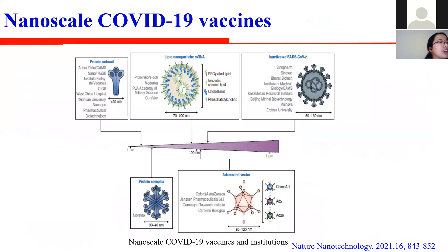Under the novel coronavirus, most vaccine candidates rely on either synthetic or naturally occurring nanoscale vector systems, with almost all candidates falling within the nanoscale size range. This figure shows the nanoscale COVID-19 vaccines authorized for emergency clinical use or in phase 3 active trials, and the institutions that developed and marketed them.